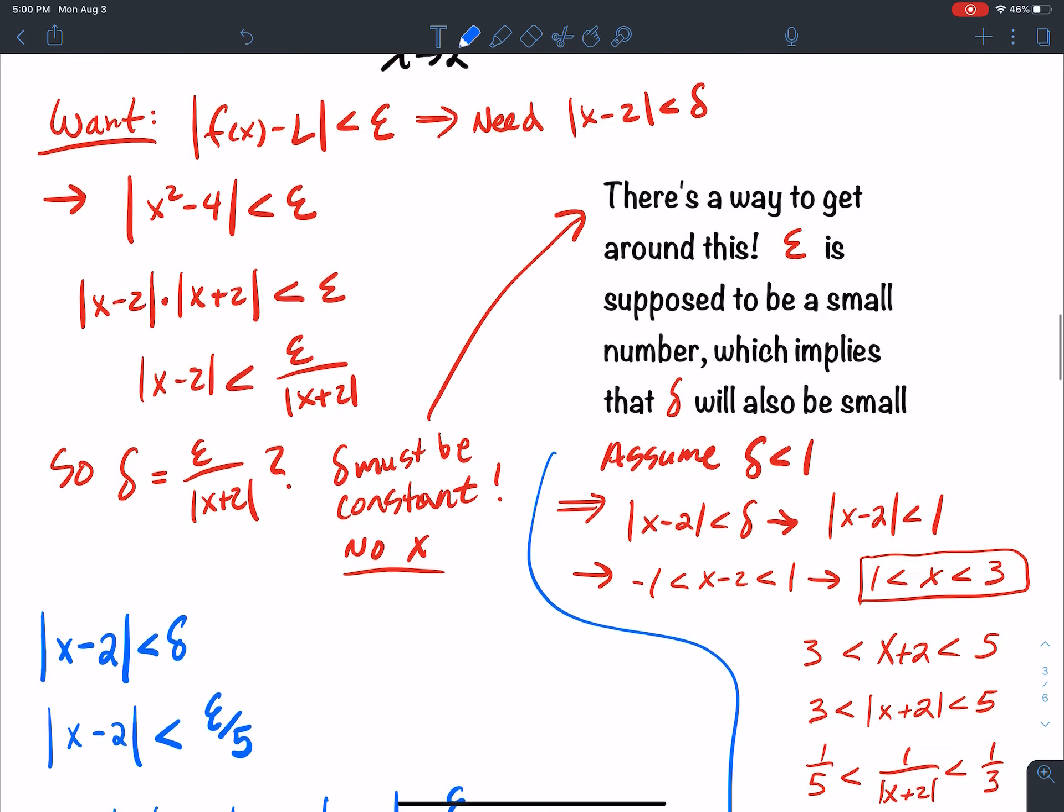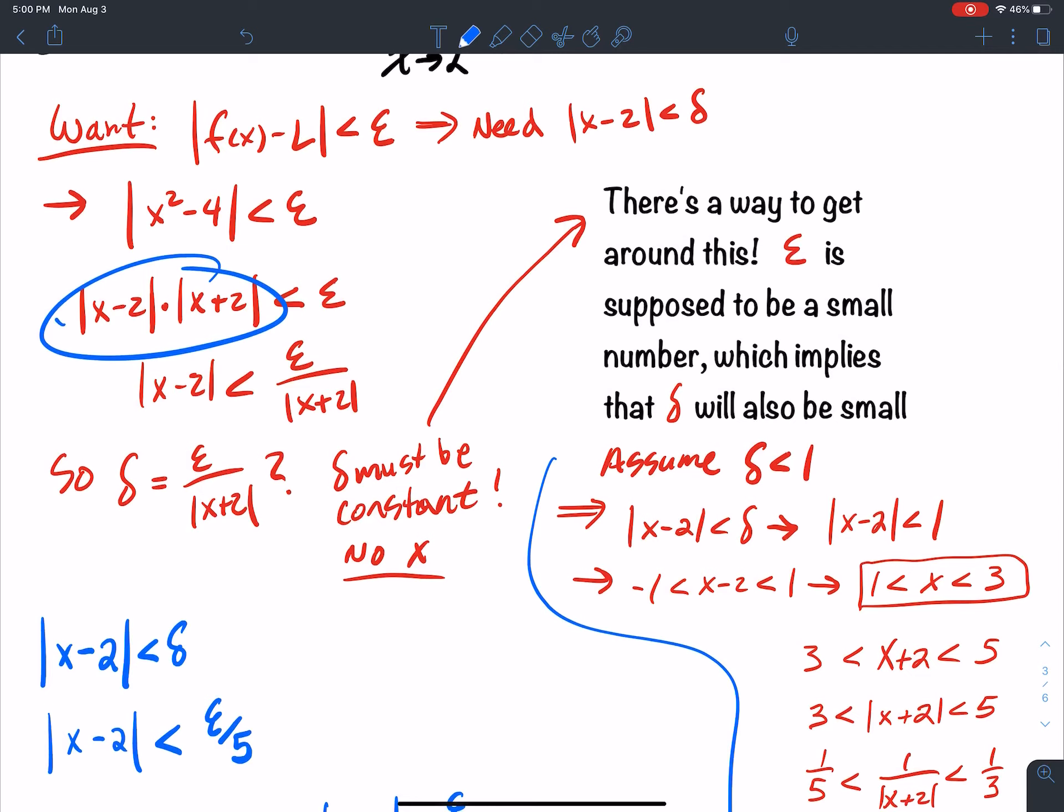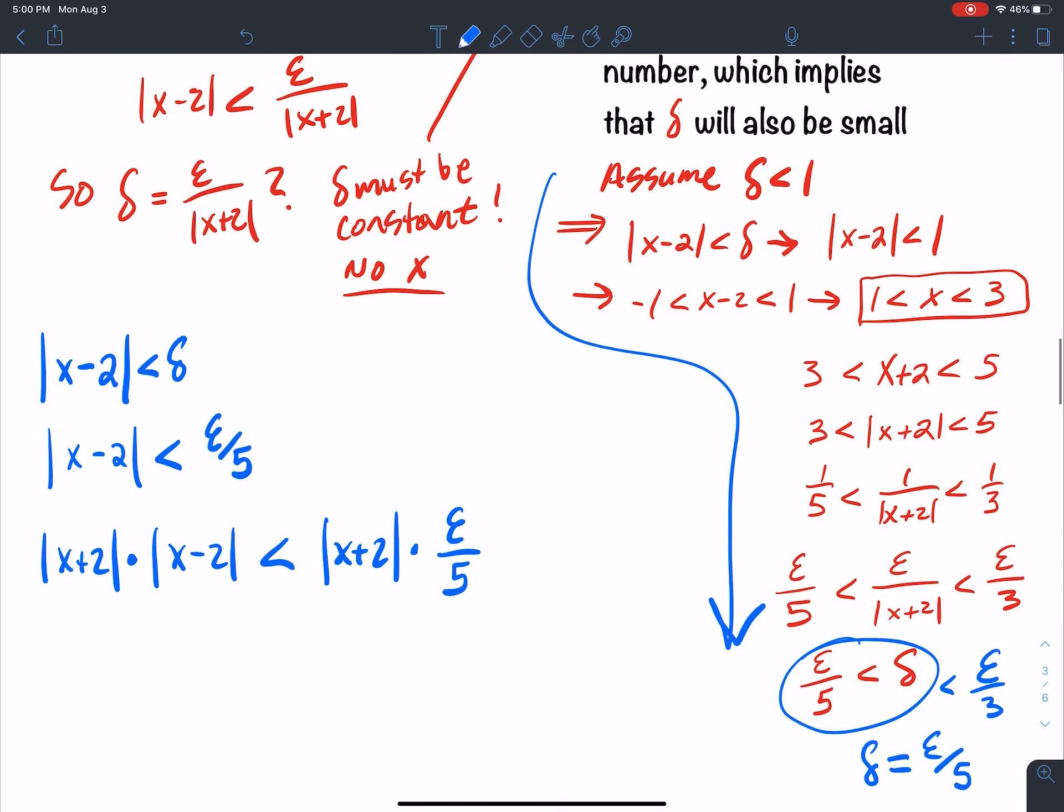Now, why did I do that? Because I know whenever I multiply this out, I get this piece here, which is my f of x minus my l, which is what's desired. So this gets me x squared minus my l, which is 4.